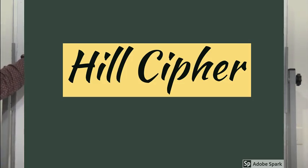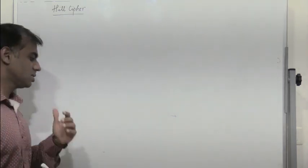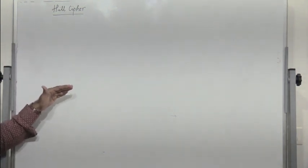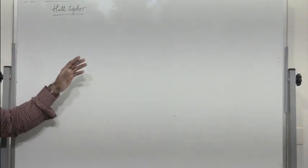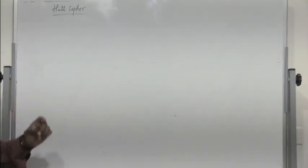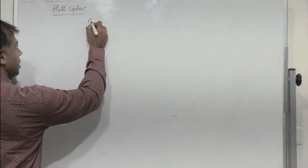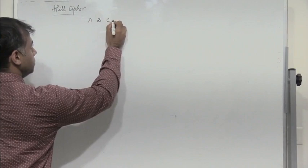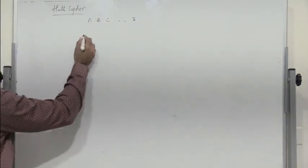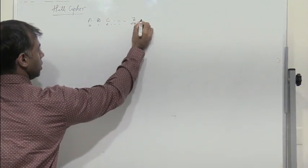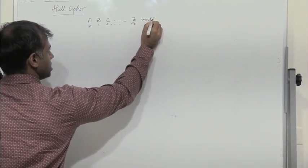The Hill cipher is a substitution cipher which takes m successive letters of plaintext and substitutes m ciphertext letters, with the substitution determined by m linear equations. Just like Caesar's cipher or any other classical encryption technique, each alphabet is assigned a numerical value. For alphabets a to z, we assign numerical values 0 to 25, so we are operating in mod 26 in general.